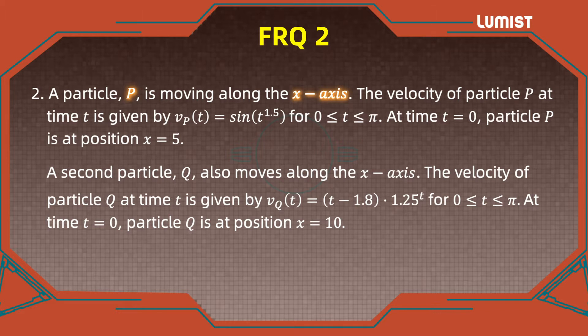We're given another particle Q that is also moving along the x-axis. The velocity of the particle is also given by a function that is a product of a polynomial and a power of a number, 1.25. The domain is the same, 0 to π, and we're also given an initial condition.